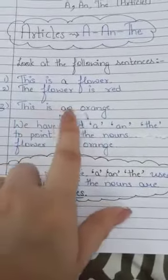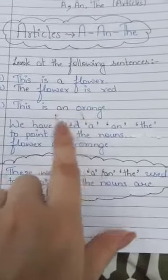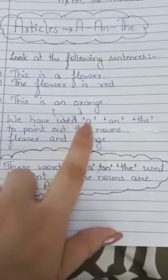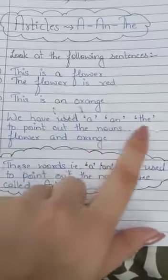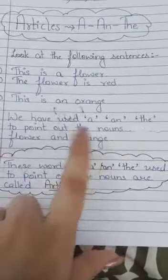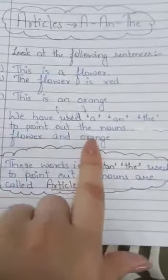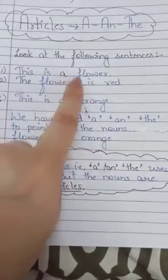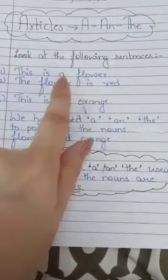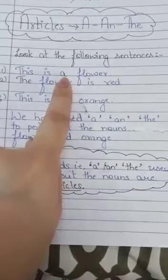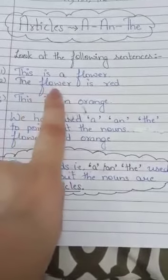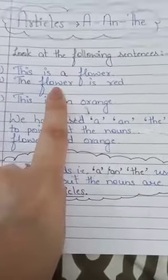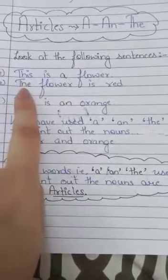In the first sentence, the noun is 'flower' and we have used 'a'. In the second sentence, the noun is again 'flower' and we have used 'the' — 'the flower is red'. In the third sentence, we have used 'an' — 'this is an orange'.